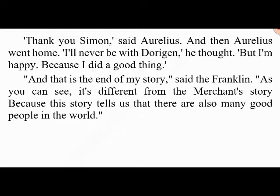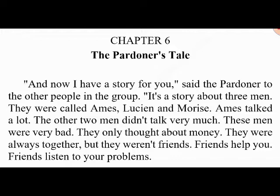Then Aurelius remembered: 'I have to pay Simon a thousand pounds and I only have five hundred. I'll bring him five hundred — I think he'll understand.' Aurelius went back to Simon's house, very worried. Chapter Six: The Pardoner's Tale. 'Now I have a story for you,' said the pardoner to the group. 'It's a story about three men — they were called Amis, Lucian, and Maurice. I will begin my story in an inn.' Amis talked a lot; the other two men didn't talk very much.